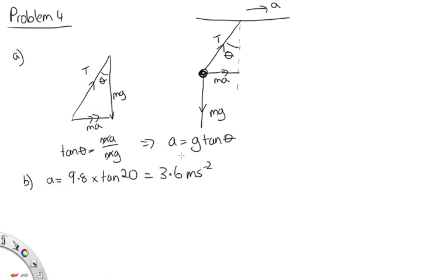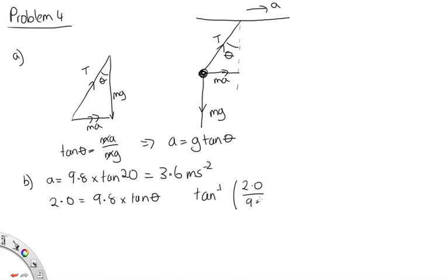Then it asks us to find θ when A = 2.0 m/s². So 2.0 = 9.8 × tan θ, meaning θ = arctan(2/9.8). Solving on the calculator gives θ = 12 degrees.